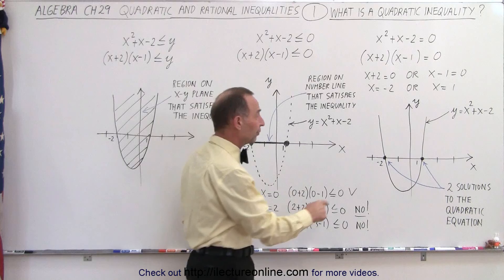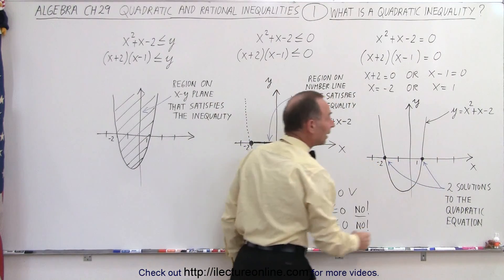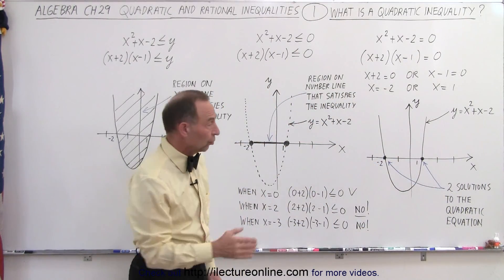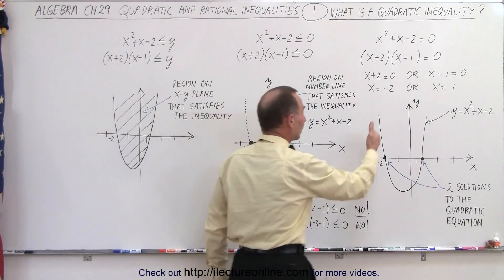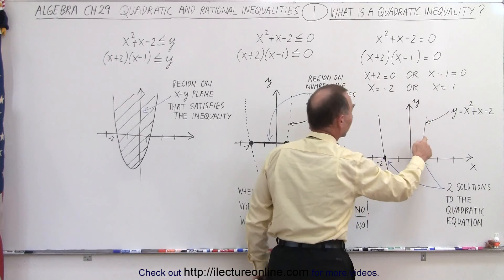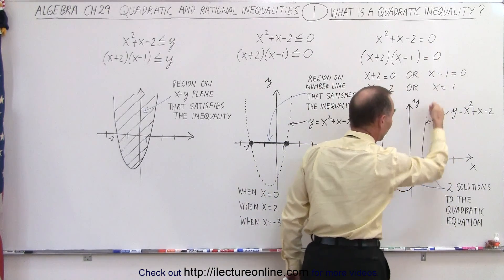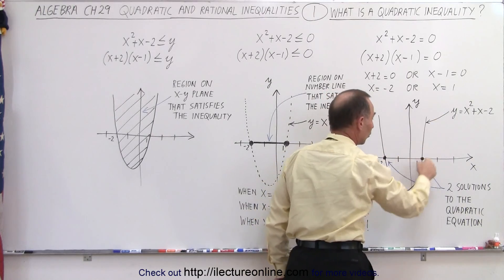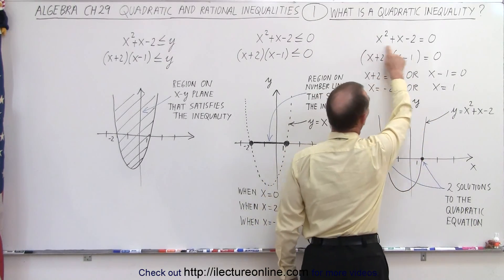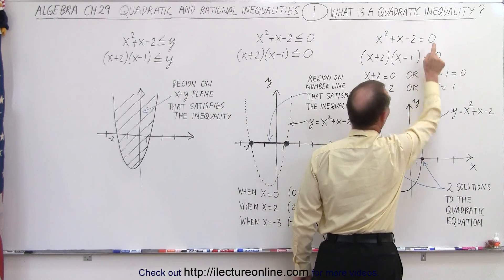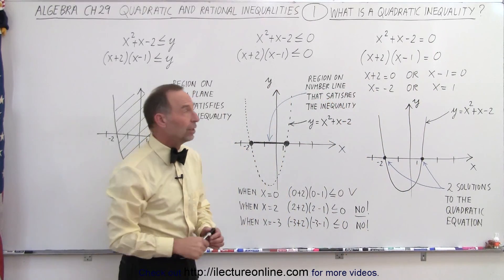We found the solutions and therefore found the two points on the number line that represent the solutions: negative 2 and 1. You can see that is where the quadratic equation — instead of writing a 0 there, if we write a y there — we end up with a quadratic graph. Notice where it crosses the x-axis; that is where we find the solution where y equals 0. After all, the x-axis is where y equals 0.